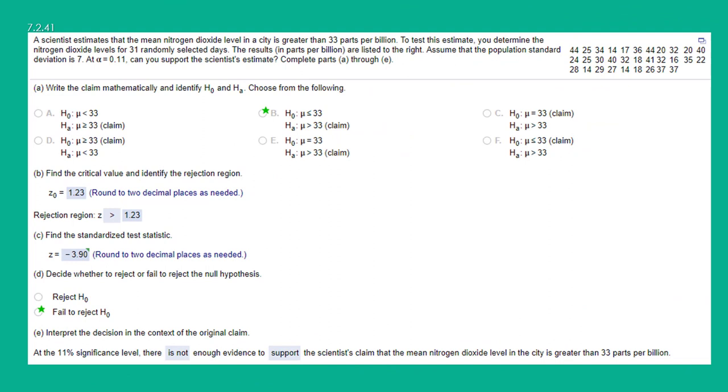Hi, this is Dr. Don. I have a problem out of Chapter 7, Section 2, about a population mean.